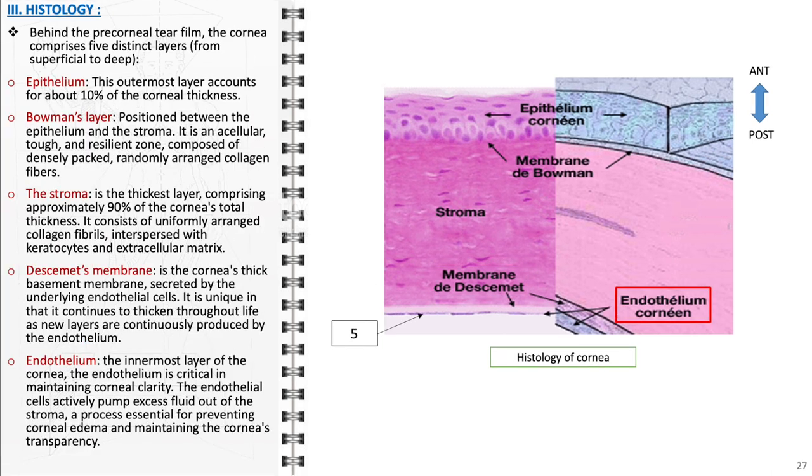The endothelium, the innermost layer of the cornea, has a primary function of regulating corneal hydration. The endothelial cells actively pump excess fluid out of the stroma, a process essential for preventing corneal edema and maintaining the cornea's transparency. The limited regenerative capacity of these cells highlights their vulnerability, making their preservation vital for sustained corneal health and clear vision.